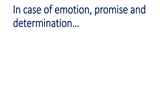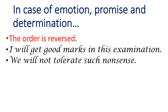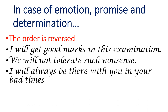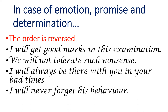In case of emotions, promise, and determination, the order is reverse — यहाँ पर order उल्टा है. For example: 'I will get good marks in this examination' (मैं exam में अच्छे marks अर्जित करूंगा) — यह इरादा है, I के साथ will लगाया जाता है. 'We will not tolerate such nonsense' (हम ऐसी बकवास सहन नहीं करेंगे). 'I will always be there with you in your bad times' — यह वादा है. 'I will never forget his behavior' — इसमें emotions हैं. So here, will is used with first person.